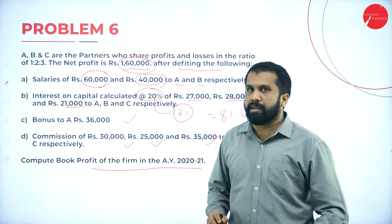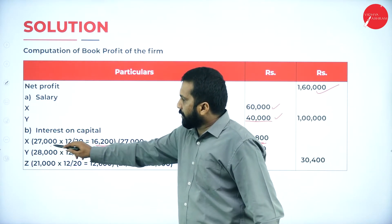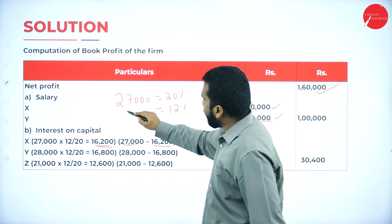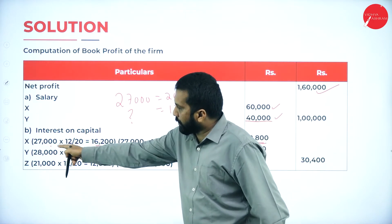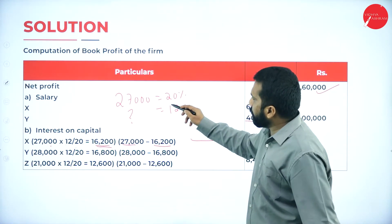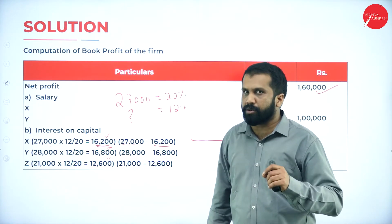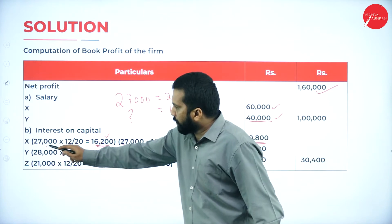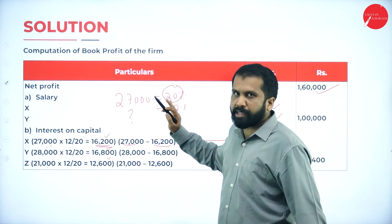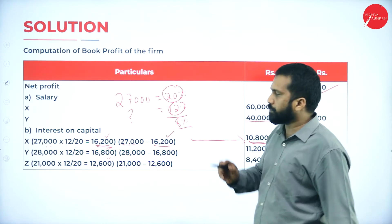They calculated 20%, but we have a limit of 12%. So convert: 27,000 equals 20%, how much for 12%? Whatever amount they have given is equal to 20% - we don't want 20%, we want 12%. Converting gives 16,200, 16,800, and 12,600. From the total, minus the 12% portion, because 20% was given but 12% is allowed - so 20 minus 12, that 8% is your inadmissible amount.